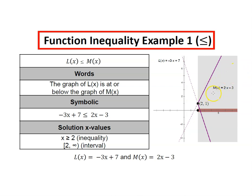When we look at the graph, we have a number line representation, x greater than or equal to 2 marked on the x-axis. And this gray band shows where the graph of L(x) is at or below the graph of M(x).